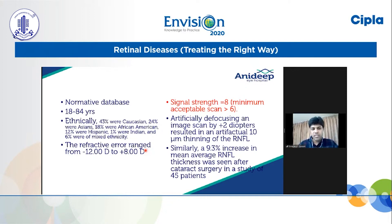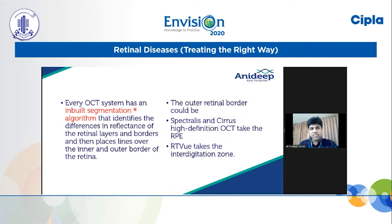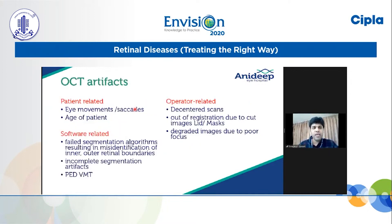Refractive error beyond minus 12 and plus 8 may give some artifacts. The signal strength of 8 is desirable, but a minimum acceptable scan is more than 6. Every OCT system has an inbuilt segmentation algorithm that identifies differences in reflectance of the retinal layers and borders and places lines over the inner and outer border of the retina. Different machines will have different segmentations — typically Spectralis and Cirrus will take the outer retinal border as the RPE, whereas the RTVue will take the interdigitation zone. OCT artifacts can be divided into patient-related, software-related, or operator-related.